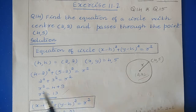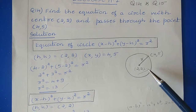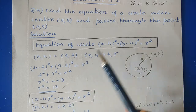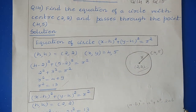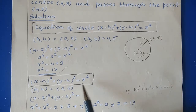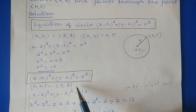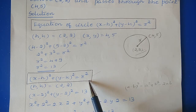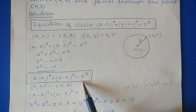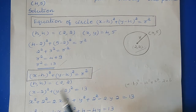So r² = 4 + 9 = 13. Now that we know the radius and center, we can directly find the equation of the circle. Using the general equation (x − h)² + (y − k)² = r², put the center as (2, 2) and r² = 13.